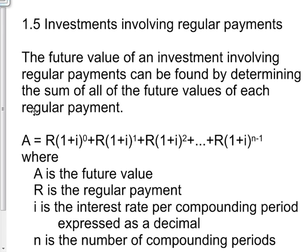Here's the formula. The total future value, A, equals R times (1+i)^0, plus R times (1+i)^1, plus R times (1+i)^2, and it continues until we get to R times (1+i)^(n-1).